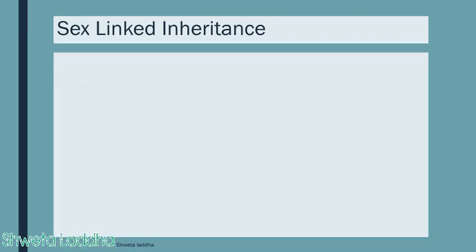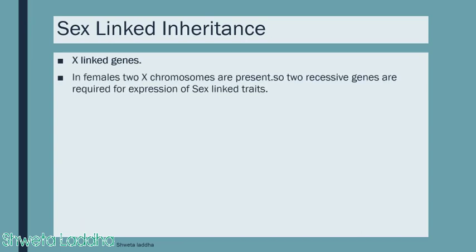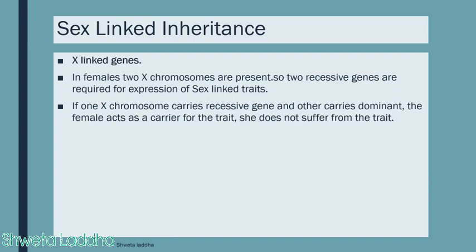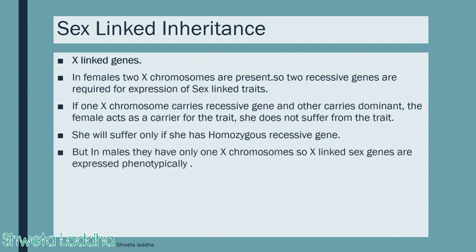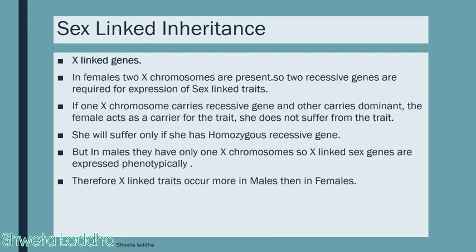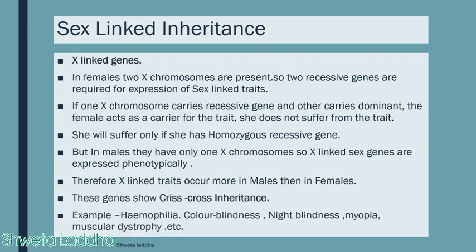Now let us discuss sex-linked inheritance. In females, two X chromosomes are present, so two recessive genes are required for expression of a sex-linked trait. If one X chromosome carries a recessive gene and the other carries a dominant gene, the female acts as a carrier — she does not suffer from the trait. Males have only one X chromosome, so X-linked genes are expressed phenotypically in males. Therefore, X-linked traits occur more in males, showing crisscross inheritance where males are sufferers and females are carriers. Examples include hemophilia, color blindness, night blindness, myopia, and muscular dystrophy.